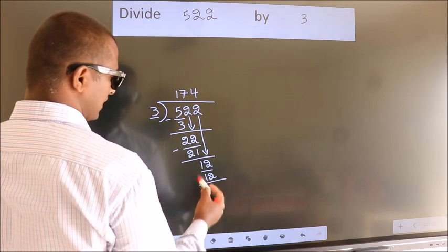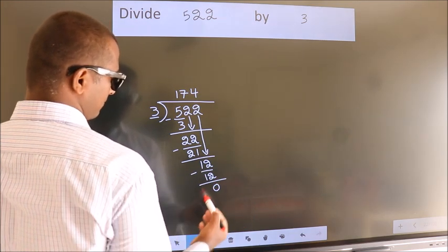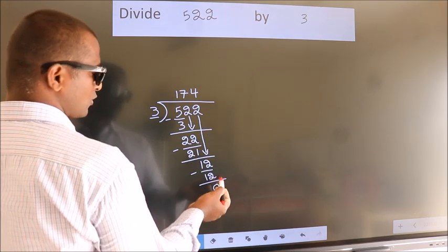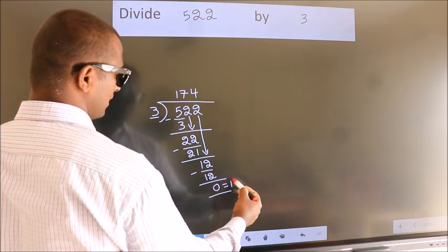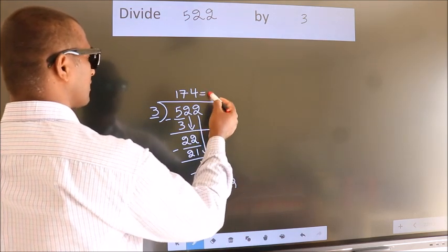Now we subtract. We get 0. No more numbers to bring it down. So we stop here. This is our remainder. This is our quotient.